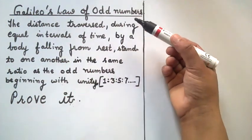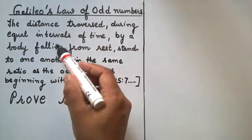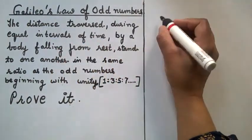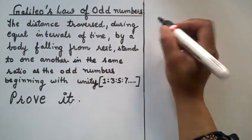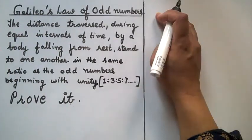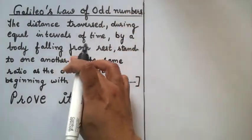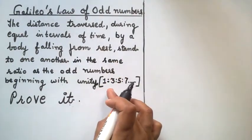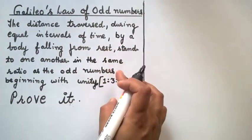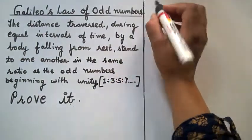In this chapter, there is one example from NCRT in which we have to prove that the distance covered by a free fall body — falling from some height — is in the ratio of odd numbers in equal intervals of time. So let's prove it.